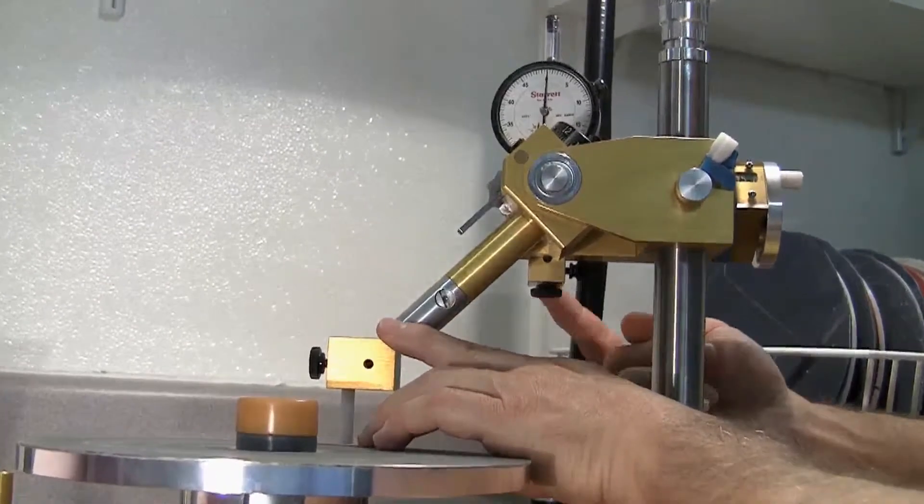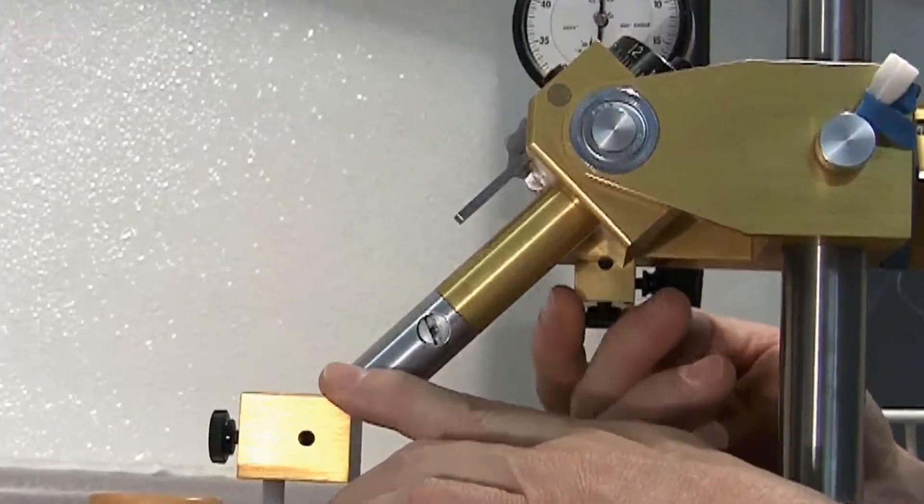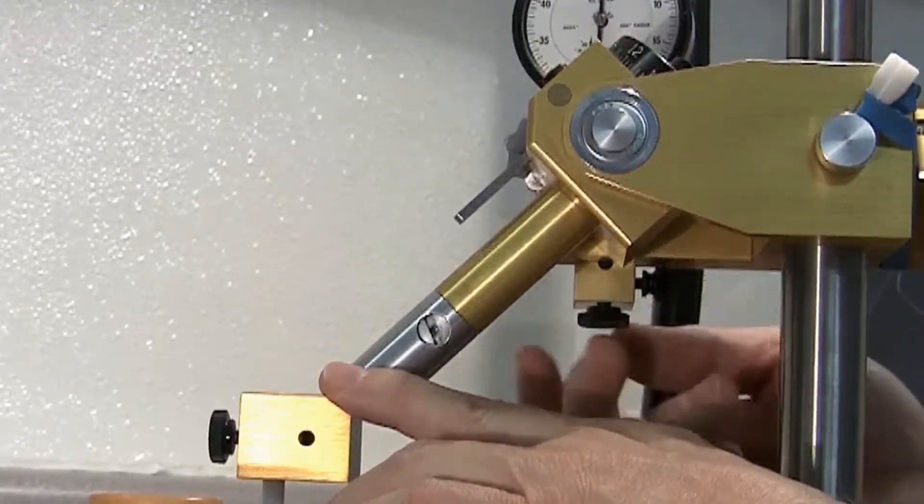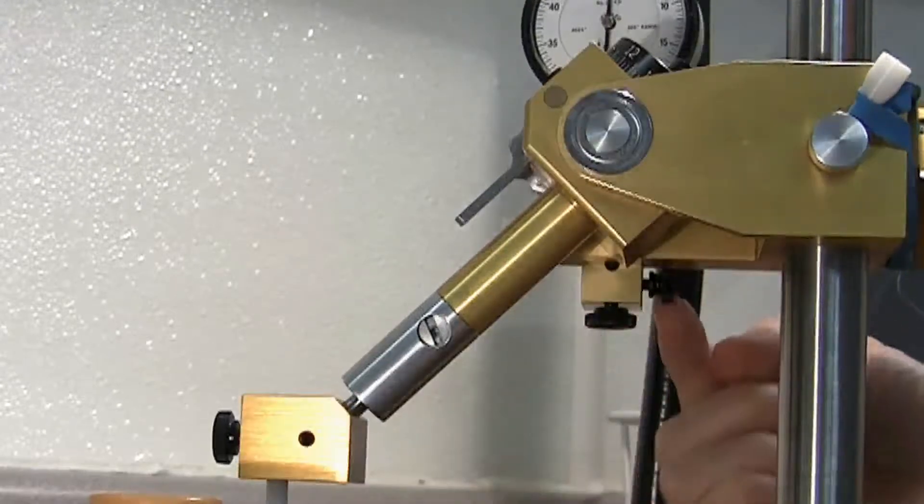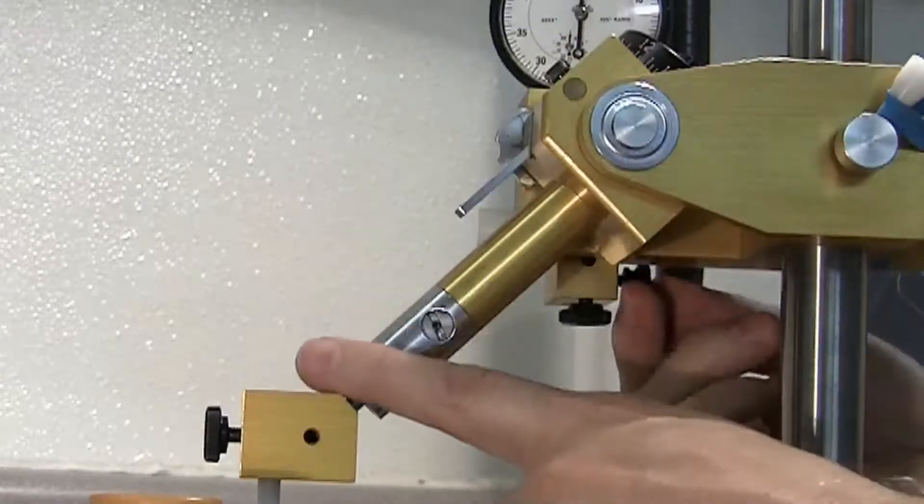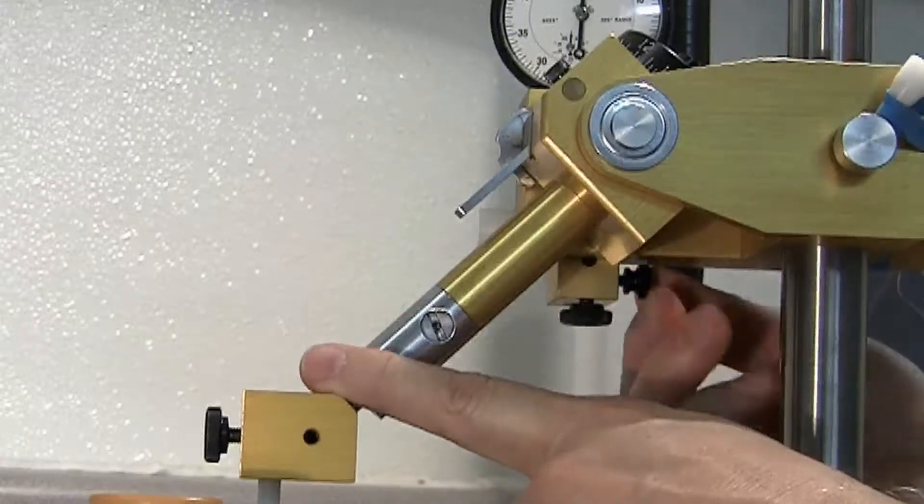We don't want the hard stop control knob creeping in or out. We don't want this to change while we're working on the machine. So if this knob is loose, we just add a little bit of tension. That's all this other thumb screw is for right here, is to add a little tension so the actual adjustment doesn't creep around.